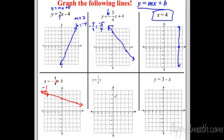The next example is y equals one-fourth x — sometimes people freak out because there's no b. If there's no b, then b equals zero, meaning you start at the origin. You still have a slope of one-fourth. You can write it as one-fourth x plus zero if that helps. Go up 1 over 4, put a dot; go back down 1 and back 4 the other way. Positive slope means a positive uphill line.